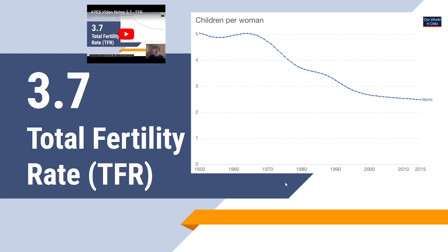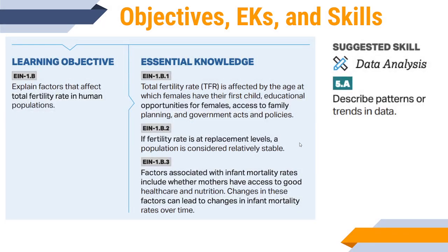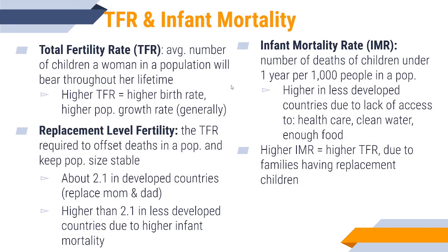Next is fertility rates. Fertility rates are largely governed by a few different factors, and it has everything to do with women in the population, as well as their ability to access education, family planning, and any government policies related to that. First, total fertility rate is the average number of children that a woman in a specific population will have throughout her whole lifetime. The higher the total fertility rate, that means a higher birth rate and typically a higher population growth rate, meaning a population that's going to be growing rapidly.